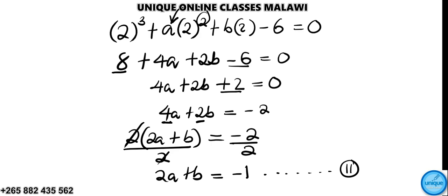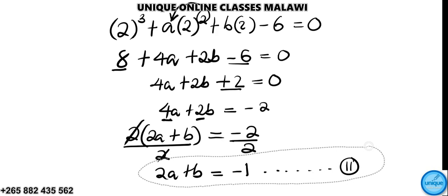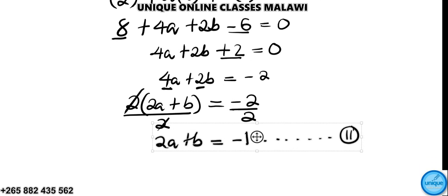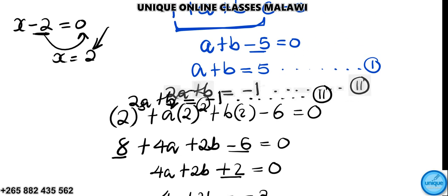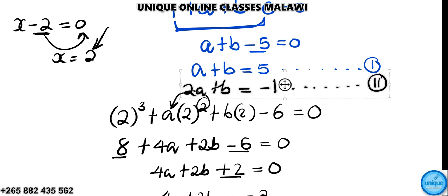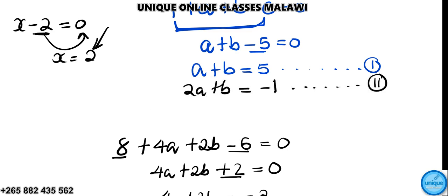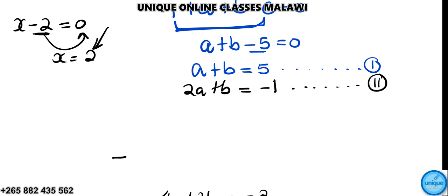Now we can solve these simultaneously with the other equation above. So a plus b equals 5 versus 2a plus b equals negative 1. We can make a the subject of the formula, so from the first equation, a is equal to 5 minus b.